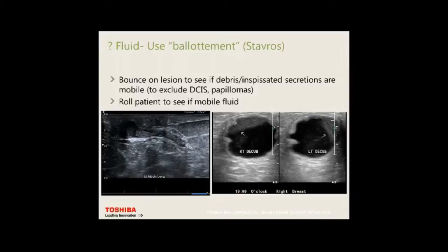Stavros talks about ballottement. If you see things in ducts, they may be mobile or inspissated secretions. Bounce on the lesion — if mobile, try to move the secretions to see if there's an underlying papilloma or DCIS.